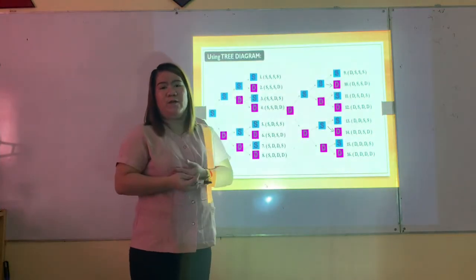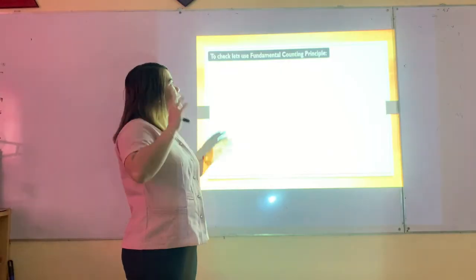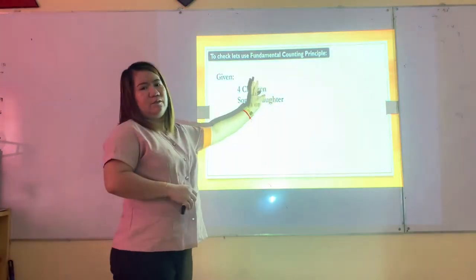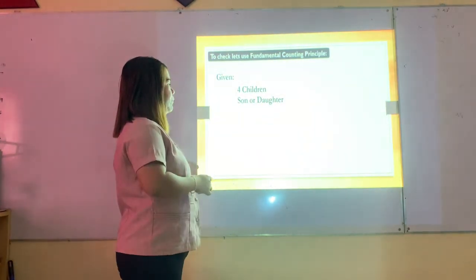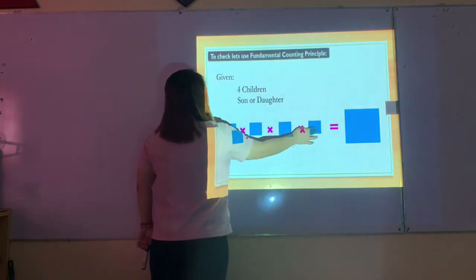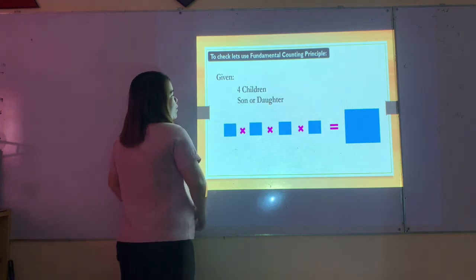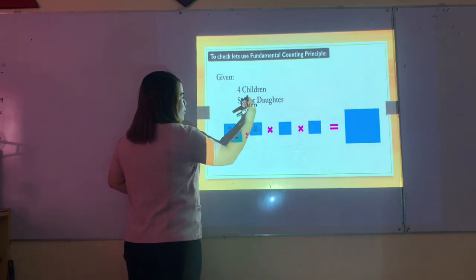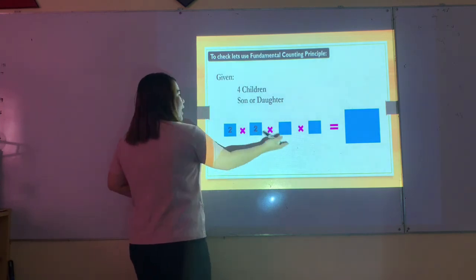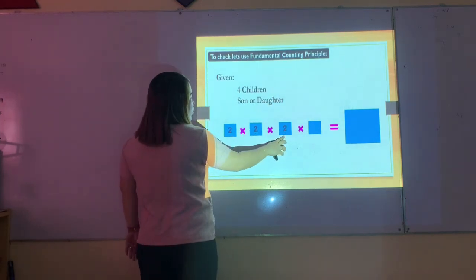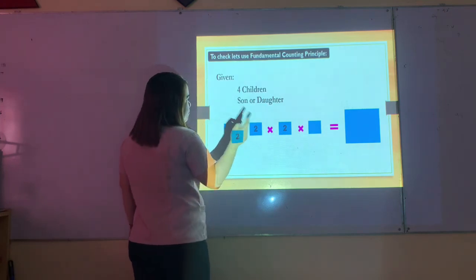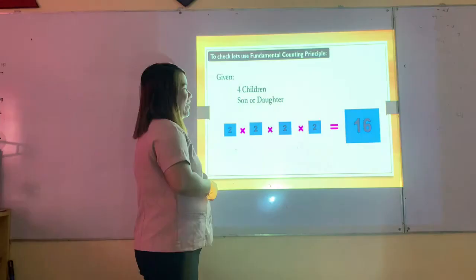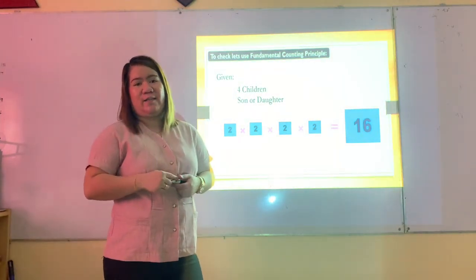All in all, there are sixteen possible ways the couple can give birth to four children. Let's verify using the Fundamental Counting Principle. For four children, each birth can be son or daughter — two choices. So: 2 × 2 × 2 × 2 = 16. Our answer from the tree diagram is correct. Who got the correct answer? Good — most of you did. Give yourself a round of applause.